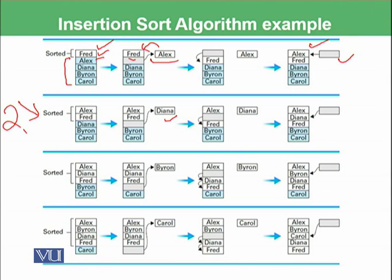Fred moves downward, and there is only one location where Diana can be placed. After the conclusion of the second step, Alex, Diana, and Fred are sorted, and the list with blue background here, Byron and Carol, is unsorted at the moment.